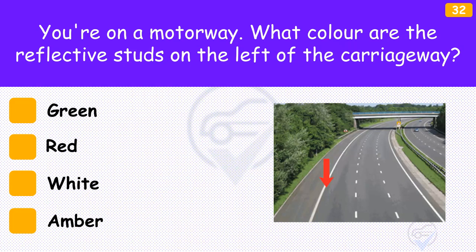You're on a motorway. What colour are the reflective studs on the left of the carriageway? The answer is 'Red'. Red studs are placed between the edge of the carriageway and the hard shoulder. Where slip roads leave or join the motorway, the studs are green.